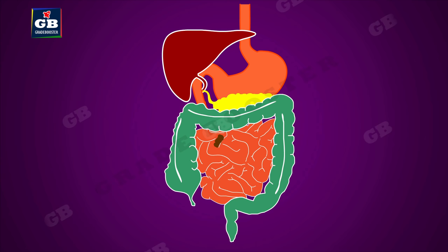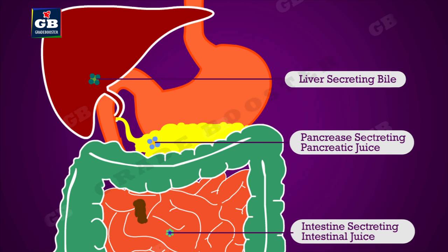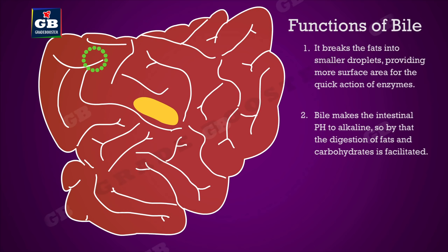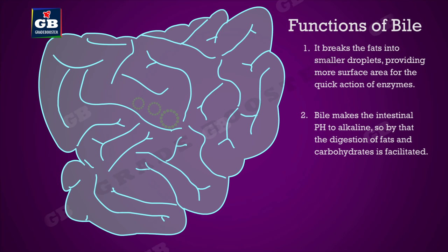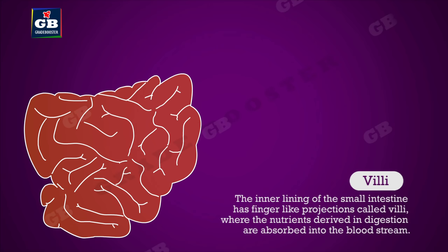The small intestine is the longest part of the alimentary canal, highly coiled to fit in a small space. It receives pancreatic juice from the pancreas, intestinal juices from glands in the intestines, and bile juice from the liver. Pancreatic juice and intestinal juices contain enzymes like trypsin, lipase, pancreatic amylase, peptidases, and nucleases. Bile breaks fats into smaller droplets providing more surface area for enzyme action, and makes the intestinal pH alkaline, facilitating digestion of fats and carbohydrates. These enzymes finally convert carbohydrates to sugars, proteins to amino acids, and fats to fatty acids and glycerol.